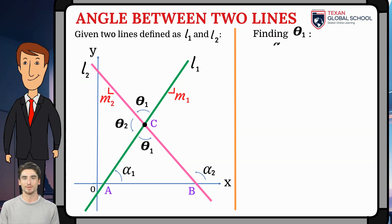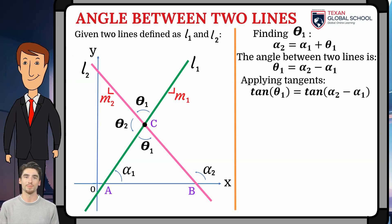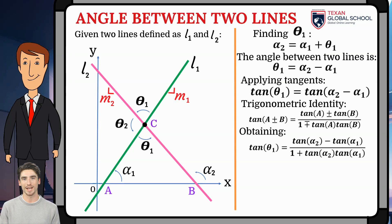Applying tangents to both members, we have that the tangent of theta1 is equal to the tangent of the difference of alpha2 with alpha1. If we apply the trigonometric identity of the sum of angles of the tangent, we obtain that the tangent of theta1 is equivalent to the difference of the tangent of alpha2 with the tangent of alpha1 over 1 plus the product of the tangents of alpha2 and alpha1.